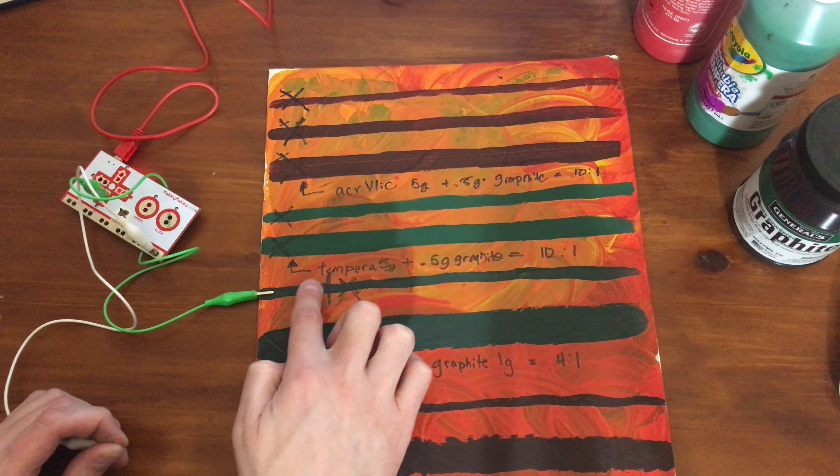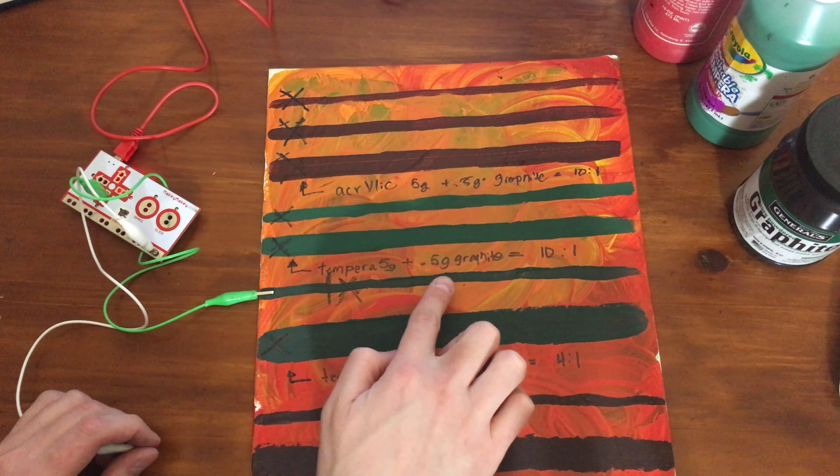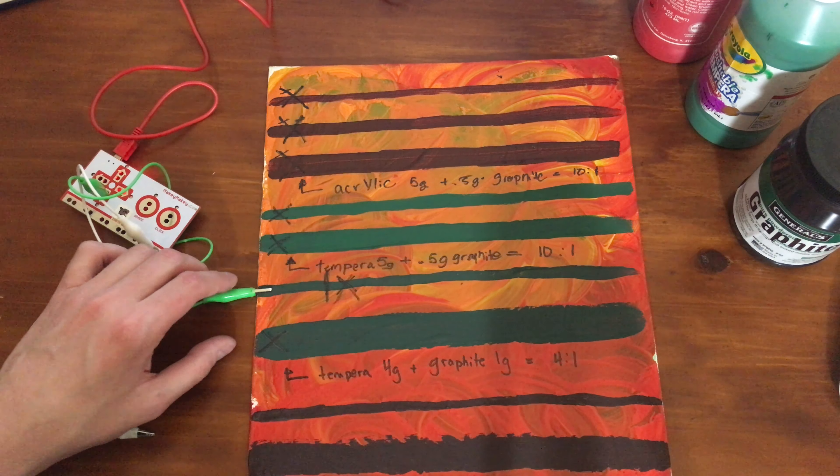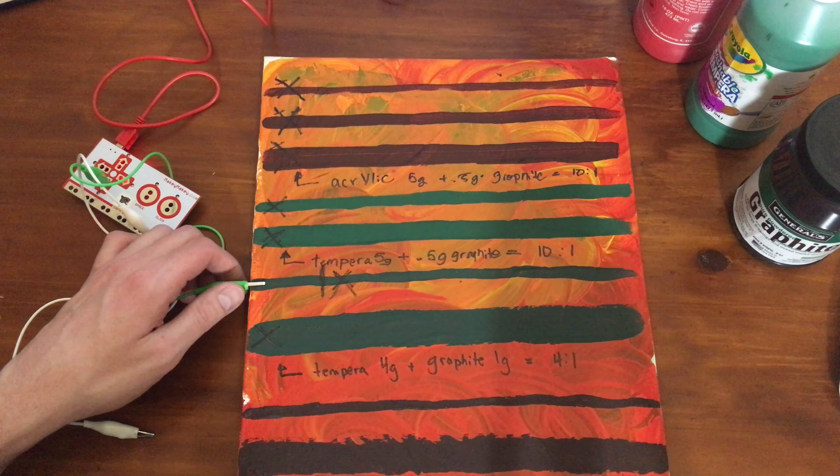When I did a slightly thicker line and it was a little bit thinner, I did have some results. I had some results yesterday, not working now, but these ten to one not enough graphite, and four to one was just barely cutting it when I was trying it the other day.